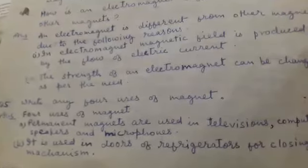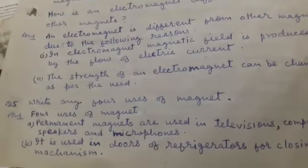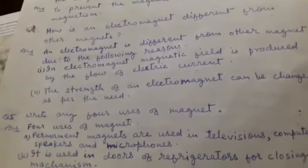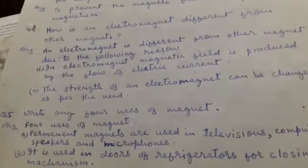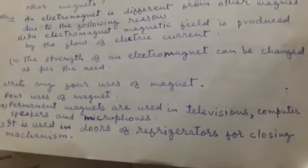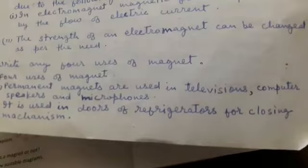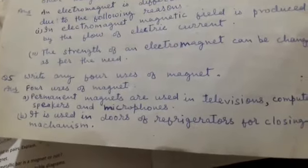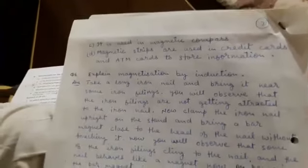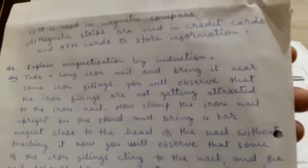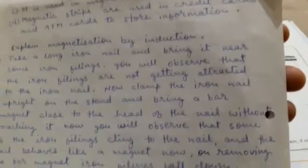Next question: Write any four uses of magnets. First, permanent magnets are used in televisions, computers, speakers, and microphones. Second, it is used in doors of refrigerators for the closing mechanism. Third, it is used in magnetic compasses.